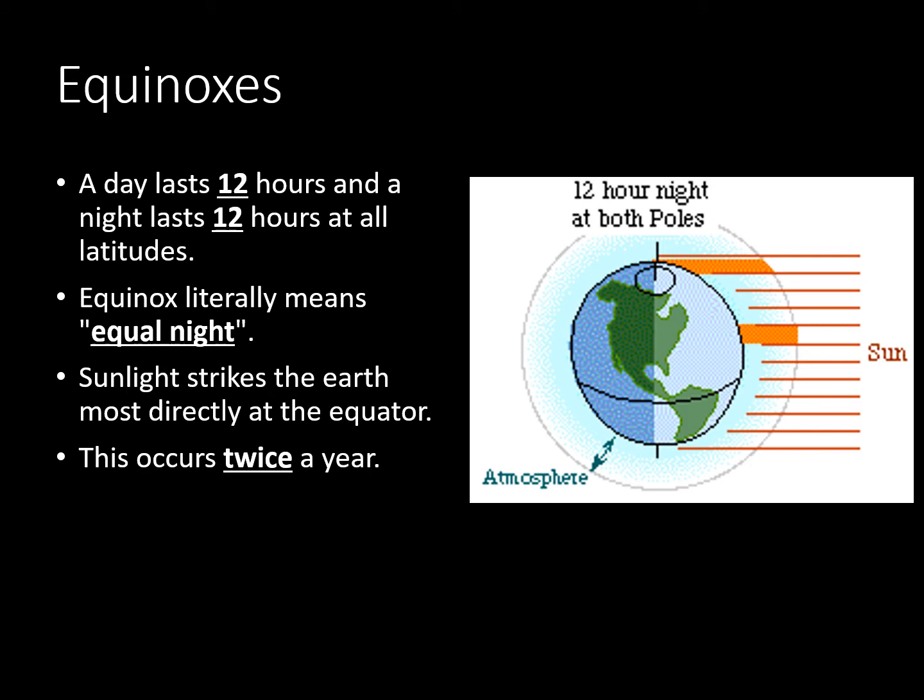Equinoxes: an equinox is when a day lasts 12 hours and a night lasts 12 hours at all latitudes. Equinox literally means 'equal night.' Sunlight strikes the earth most directly at the equator. This occurs twice a year.